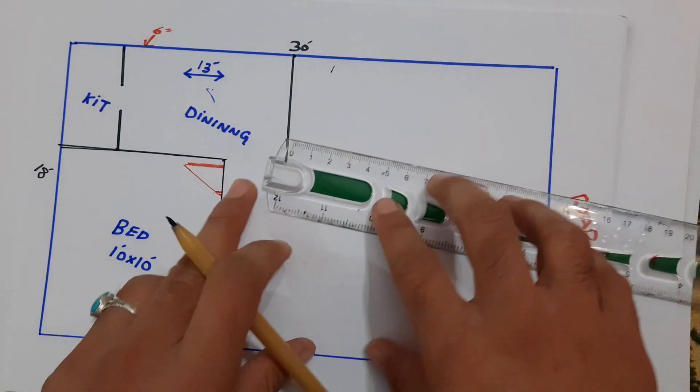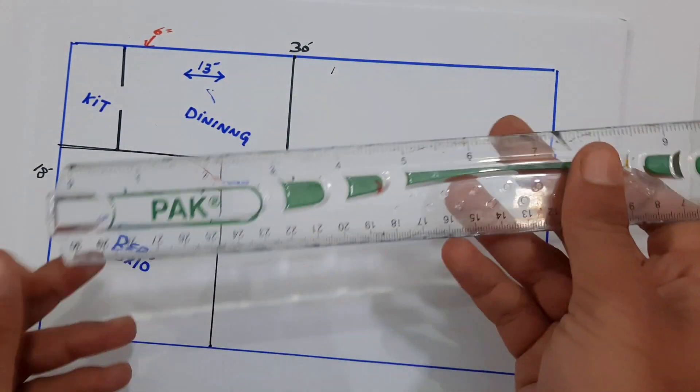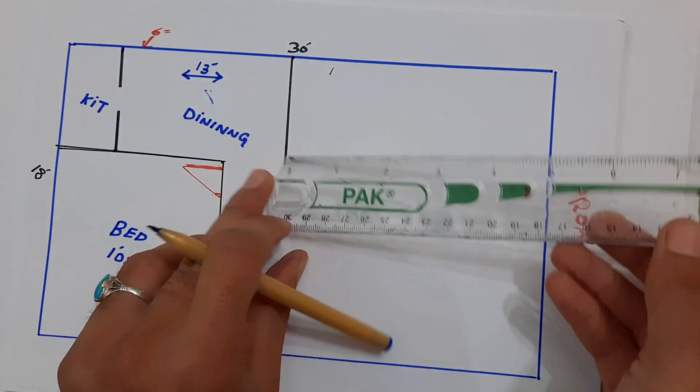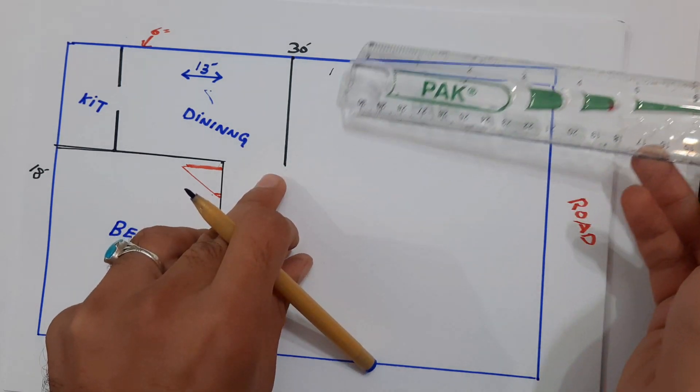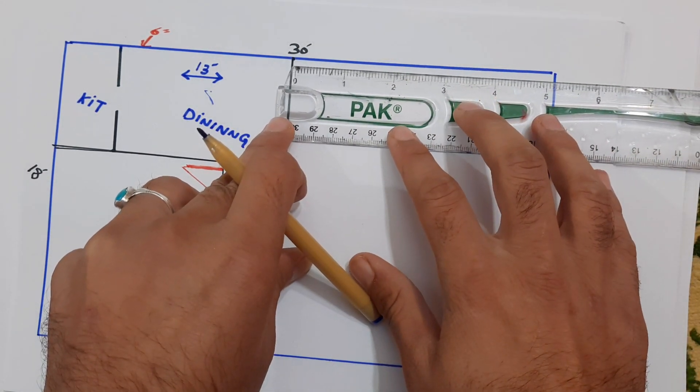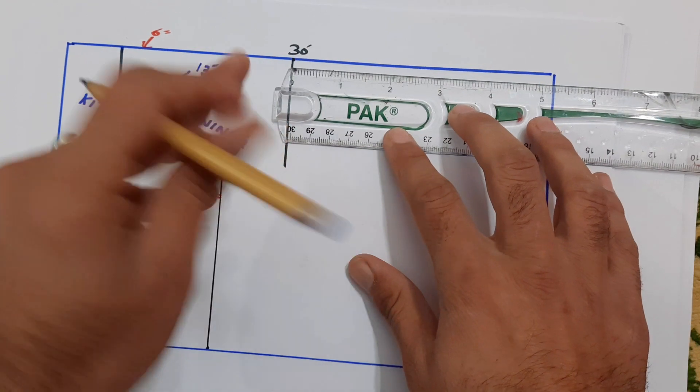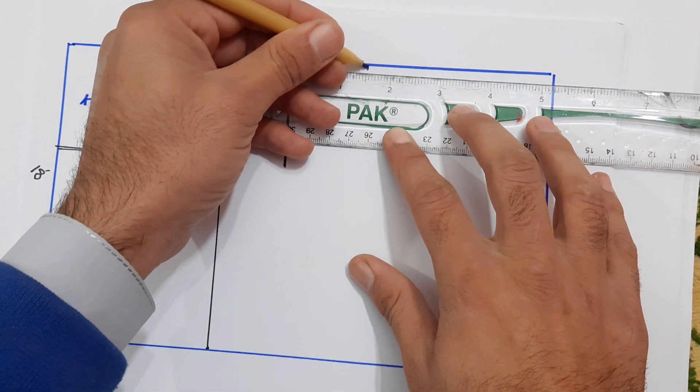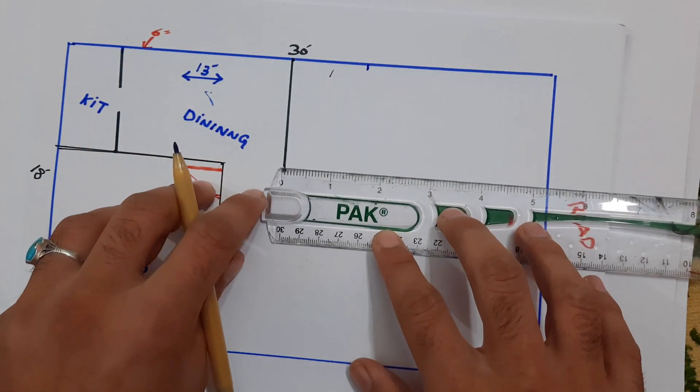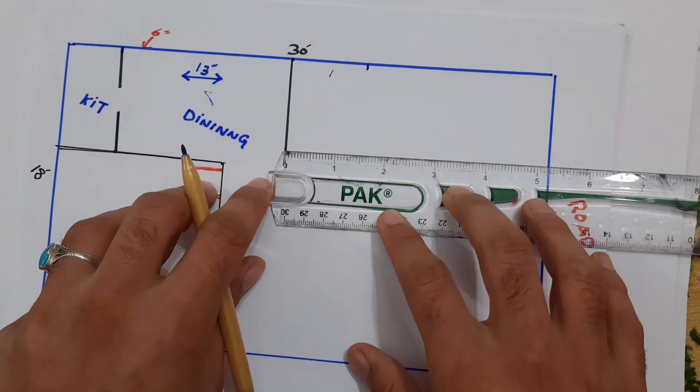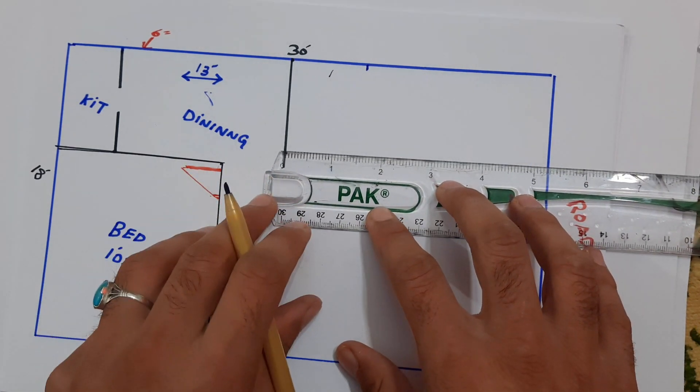Here guys we have toilet plus bath which is five feet. So five feet should be one point five inch - five by six feet.